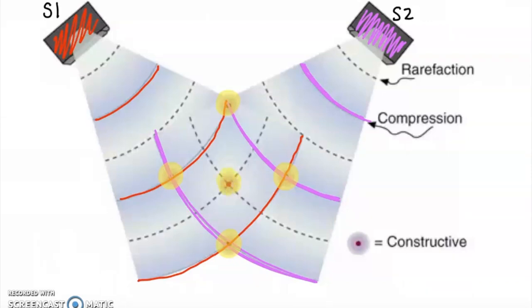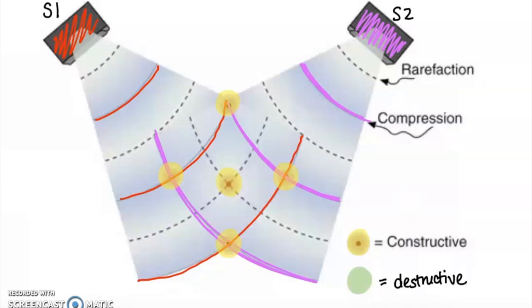Even the point in the middle is a rarefaction meeting a rarefaction — this too is constructive interference, like a trough meeting a trough, still adding together to make an even bigger wave. So all highlights here are constructive interference. Where would destructive interference be? Checking your answers: destructive interference happens every time a compression meets a rarefaction — like a trough meeting a crest. That would happen at the points in between the constructive ones.